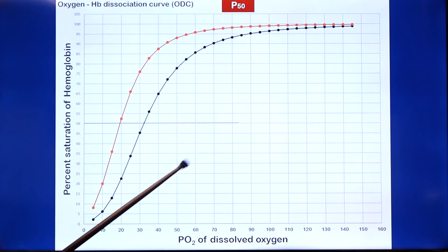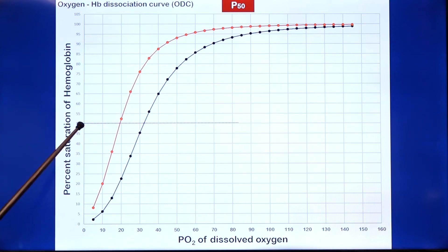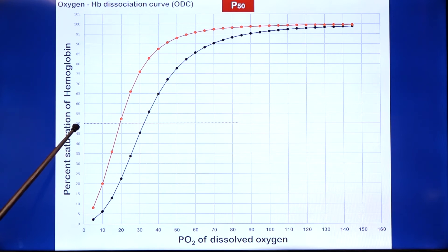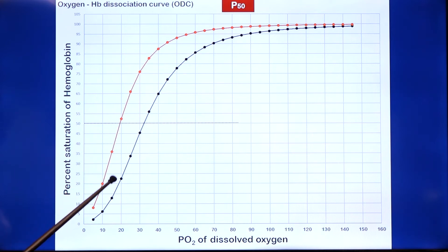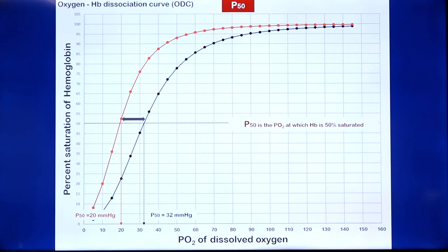P50 refers to the partial pressure of oxygen at which there is 50% saturation — that is, 50% of hemoglobin molecules exist as deoxy and 50% as oxy. It helps us compare hemoglobin's affinity for oxygen. In a left-shifted state, P50 might be about 20 mmHg; in the right-shifted case, it is about 32 mmHg. It indicates the degree of shift and is useful when comparing hemoglobin's oxygen affinity.